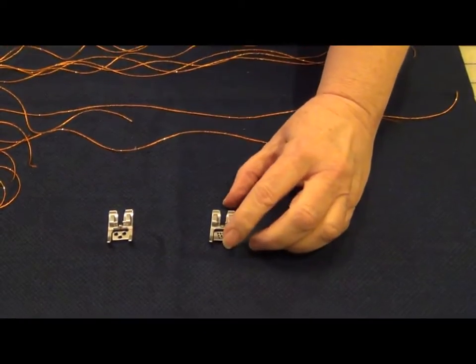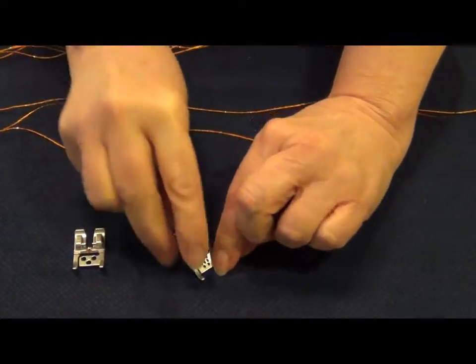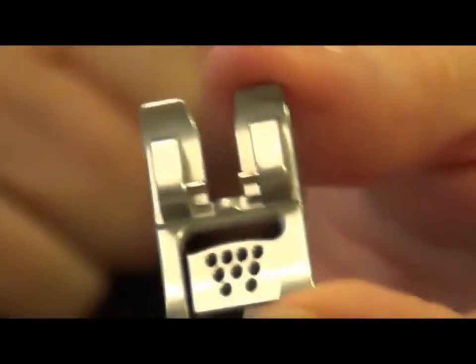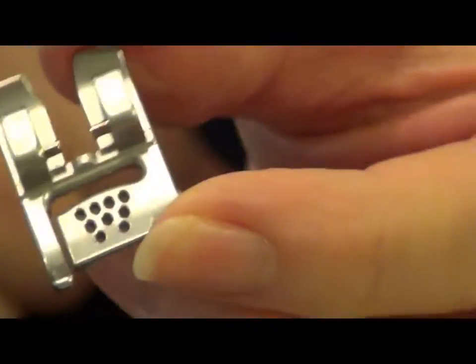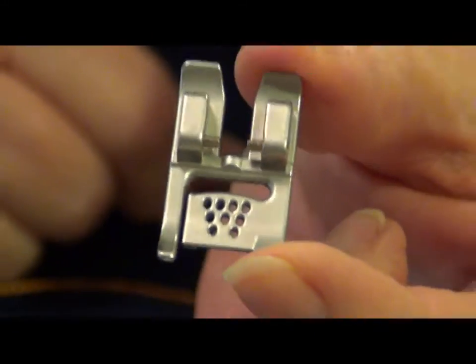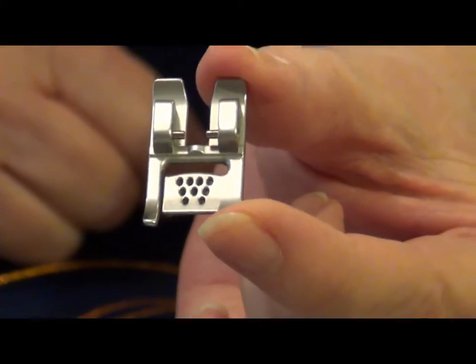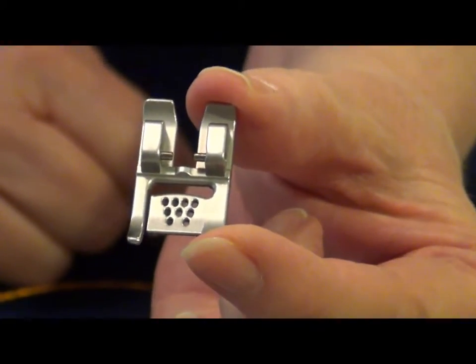The next foot we're going to take a look at is the seven to nine hole cording foot. I have to admit that I had one of these feet for years and every time I looked at it and thought about using it, I was convinced that it would be too difficult so I just left it in the package.